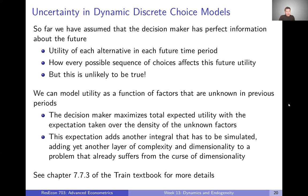We didn't even talk about uncertainty. We assumed perfect information, but usually there isn't any, which can be tricky. Perfect information means the utility of each alternative in each future time period is known to the decision maker, and also that the decision maker knows how their choice today will affect those future utilities. But really, unless decision makers can see into the future, there's probably going to be some uncertainty on their part as well.